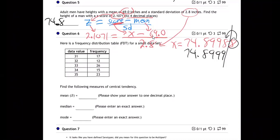74.8999. There we go. There's how we do question number five. That means we are done. It looks good.